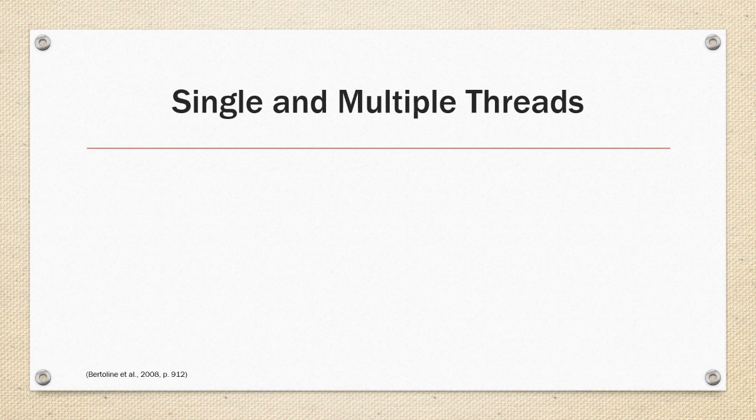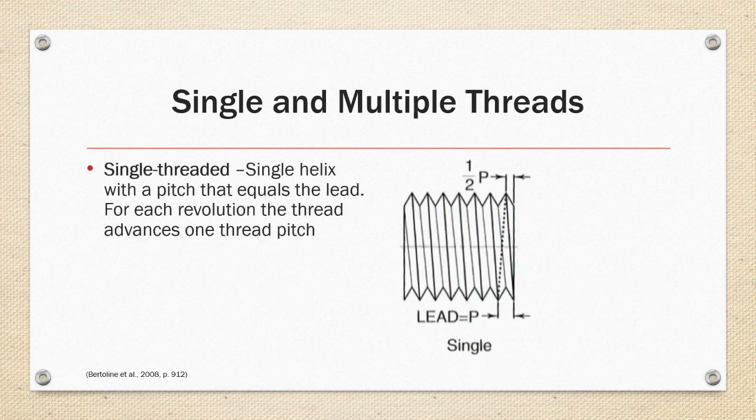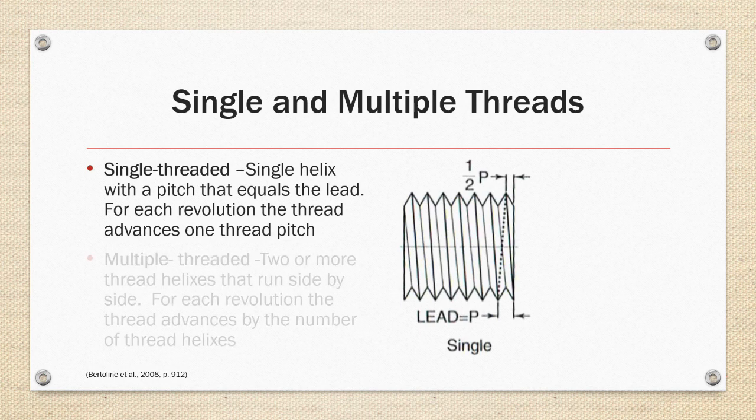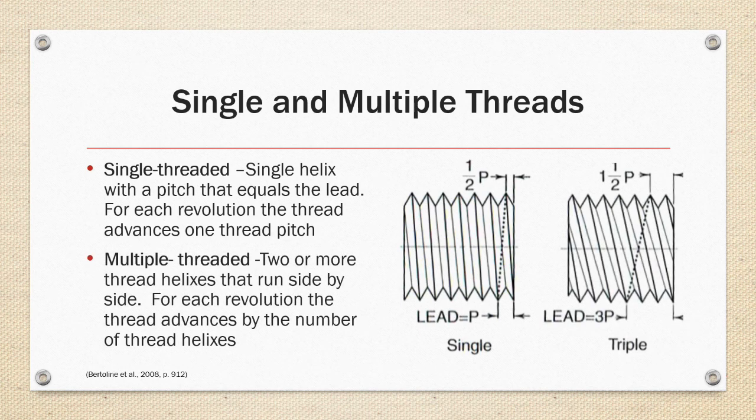Single and multiple threads. Single threads are the most common. It has a single helix with a pitch that equals the lead. For each revolution the thread pitch advances the distance of one pitch. Multiple threaded or two or more threaded helix that run side by side. For each revolution the thread advances by the number of threads in the helix. So in the example we have a triple helix thread which would advance three times the pitch for one revolution.